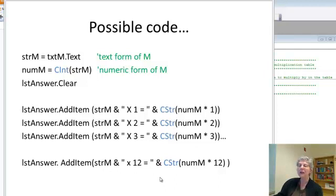So here's how we might do it. We read our number from the text box and keep it in string form and also create a numerical form, clear the list box, and then add items one at a time 12 times. So we need 12 lines here.